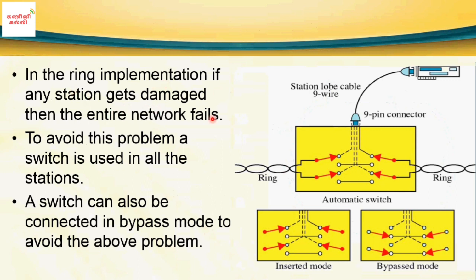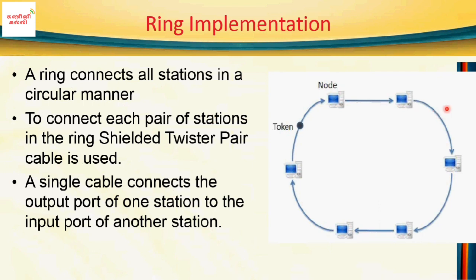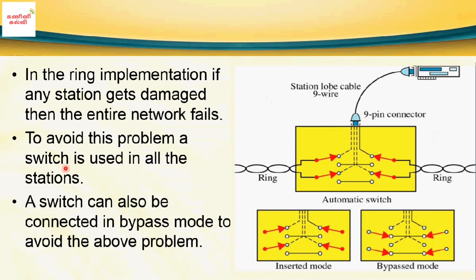If any station gets damaged, the ring can be broken. To avoid this problem, a bypass switch is used in all stations. The switch can be connected in bypass mode to avoid link failure. In normal operation, the switch is in inserted mode with the node connected. If a node fails, the switch moves to bypass mode, keeping the ring intact.